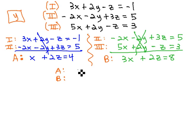A is x plus 2z equals 4, and B is 3x plus 2z equals 8, and we can solve these quickly.